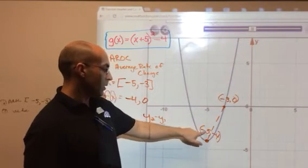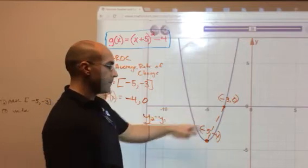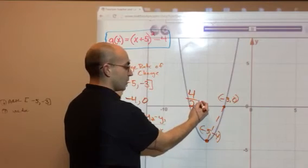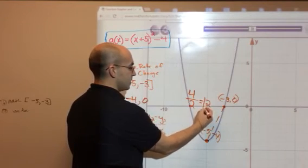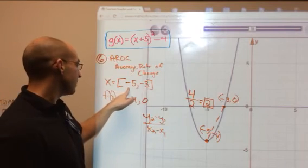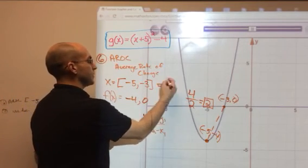So from this point, I can go 1, 2, 3, 4 units up and 2 units to the right. So the slope of the line is 4 over 2, which gets simplified to just 2. So the average rate of change on the interval from negative 5 to negative 3 is 2.